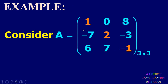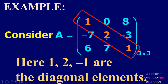Consider another example: A equal to [1, 0, 8; -7, 2, -3; 6, 7, -1]. This is a square matrix of order 3. Here 1, 2, -1 are the diagonal elements — the elements from left top to right bottom diagonal.